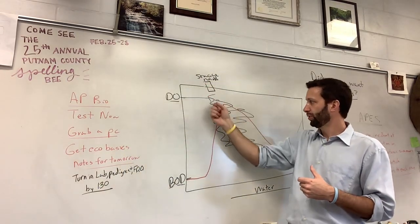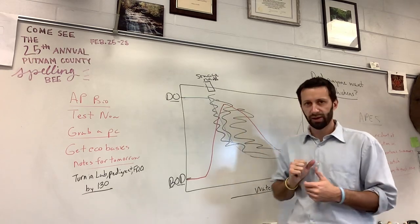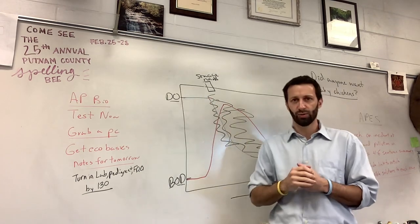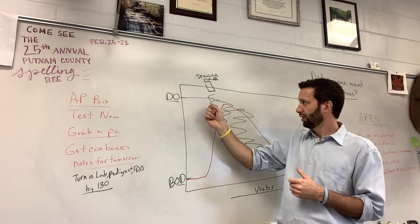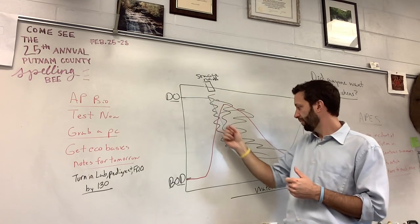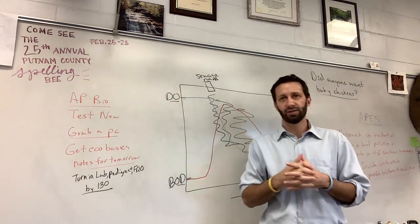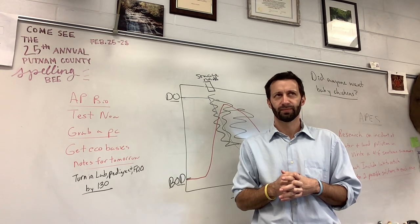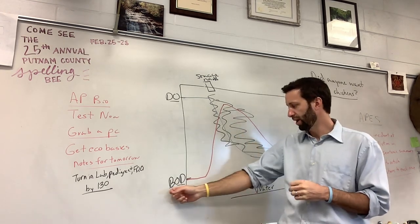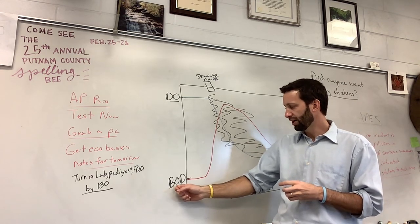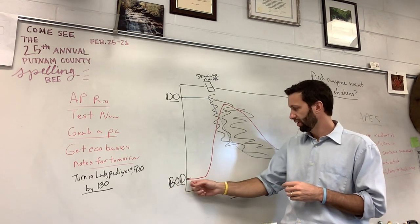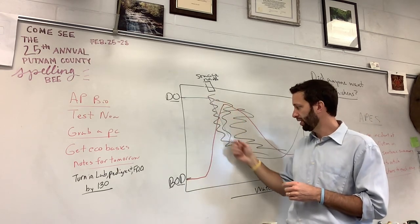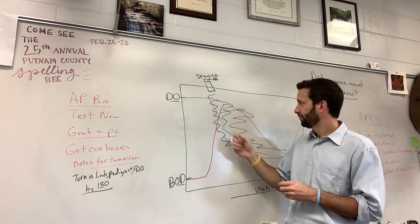In this drawing, you have an input of sewage shown here. Dissolved oxygen is pretty high until we reach that sewage input, and then it drops all the way down. The reason it drops is because the things breaking down the sewage need more oxygen. The biochemical oxygen demand — the oxygen demanded by organisms to break stuff down — goes way up when sewage comes in, so the level of dissolved oxygen drops.